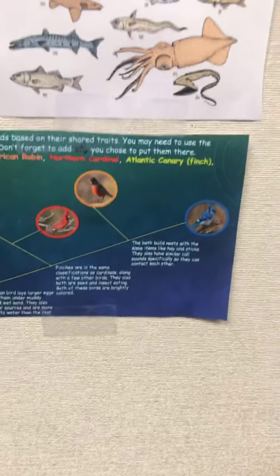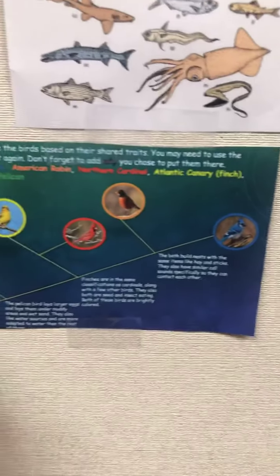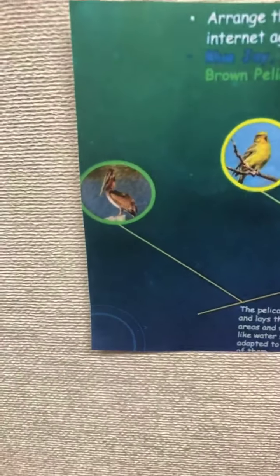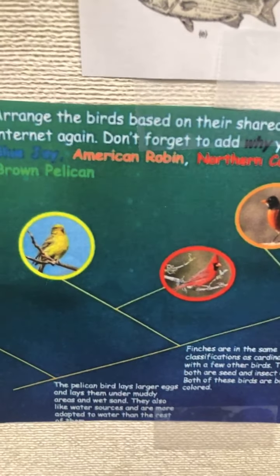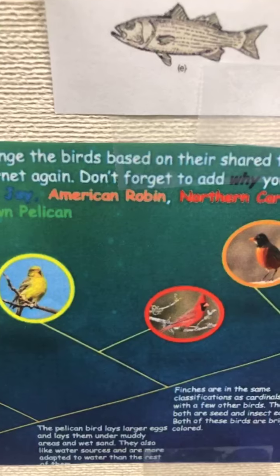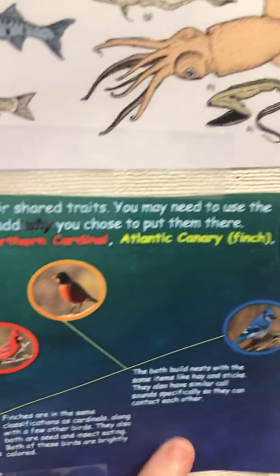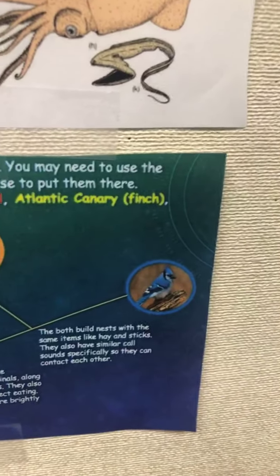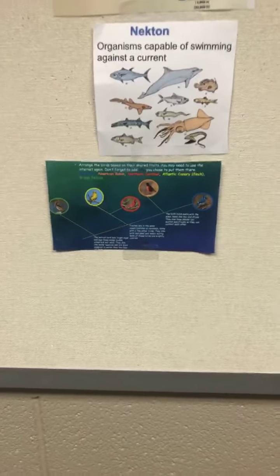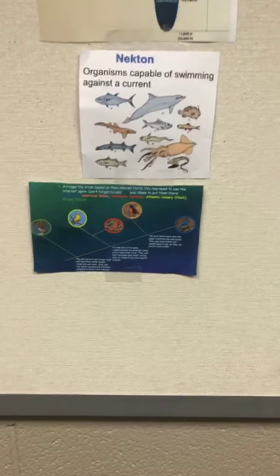Actually an Atlantic canary finch, not a goldfinch — sorry about that. You can see they split the pelican off first because they're the most different — really made for living in the water, with webbed feet and laying big eggs. Up here they put the cardinal and the finch together because they knew both of those liked to eat seeds and insects. As we go up a little more, they split the robin off, and finally they split the blue jay off, breaking off until we get to just one organism by itself, and that's the bottom of the tree.